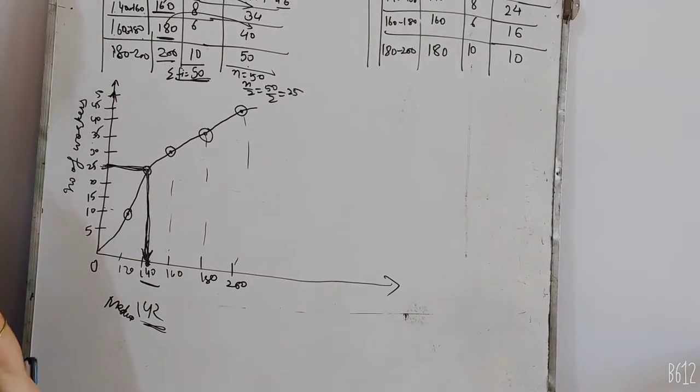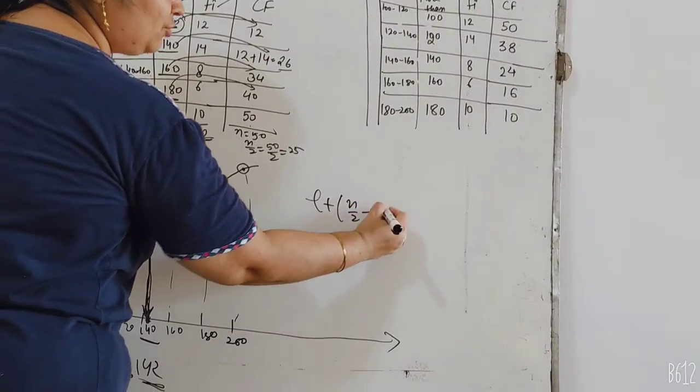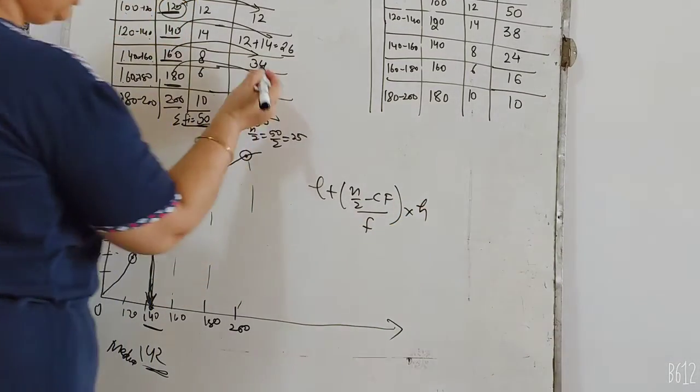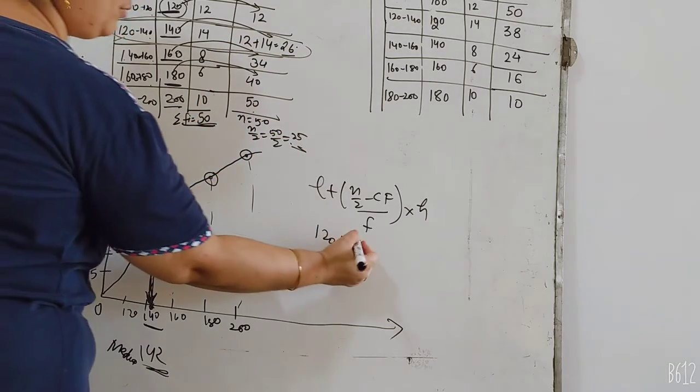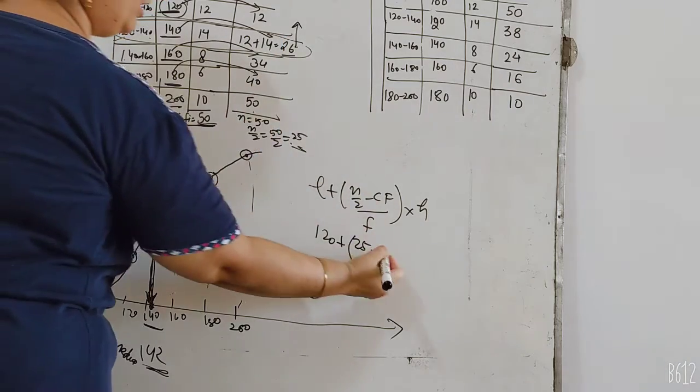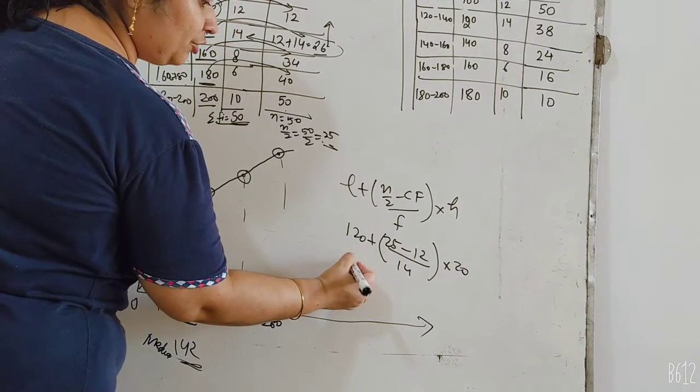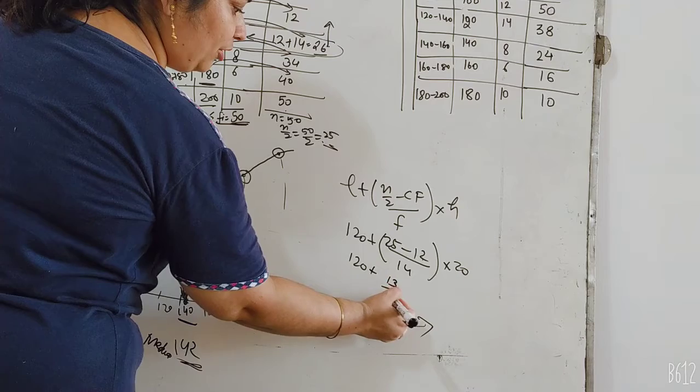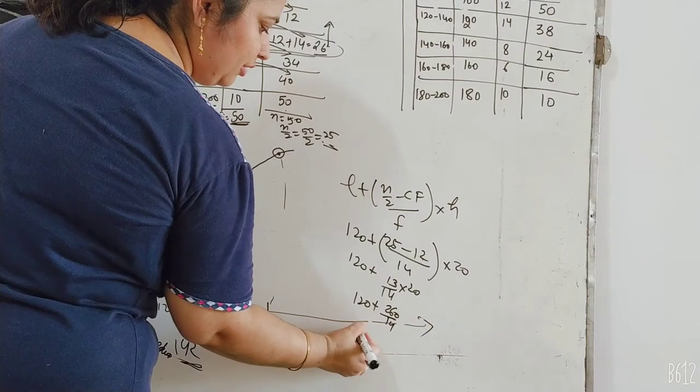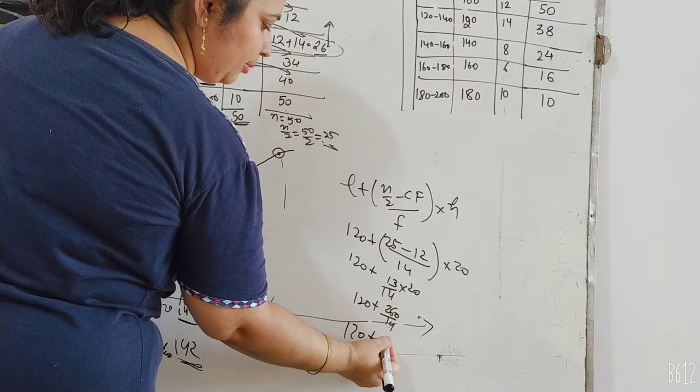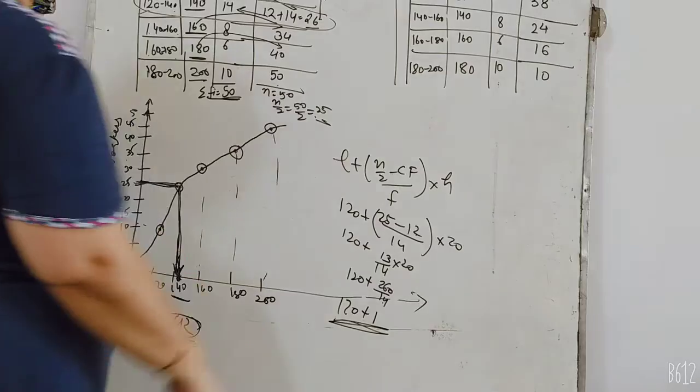जितना भी midpoint हो उसके सामने corresponding graph की x-axis की value लोगे वो आपका median होगा. अब इसको formula से भी निकाल के check कर सकते हो. formula क्या था? lower limit plus n by 2 minus cf upon f into height. कौन सी class है आपकी? 25 का है तो 26 वाली class में. इसकी lower limit कितनी है? 120 plus n by 2 minus 25, cf क्या होता? उसके ऊपर वाला कौन है? 12. और उसके सामने वाला f कितना है? 14 into gap कितने का है? 20-20. So 120 plus 25 में से 12 यानी 13 upon 14 into 20. 120 plus 260 upon 14. 120 plus 14 के divide पर गया तो यह approximately यह answer आपका 140 से less आ रहा है यानी 138 के करीब answer आए.